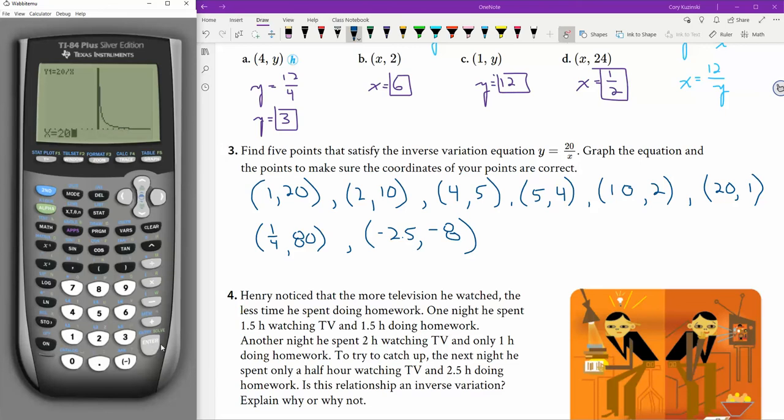10. 20. Oh, I didn't go far enough. Error. Let's go window. Take this out to 25. Graph it. Trace it. 20. There's 20 and 1. Let's go 1 fourth. 1 divided by 4. There it is right there. Way up at 80. And negative 2.5. There it is down there. Negative 2.5 and 8. Yep. All of them.